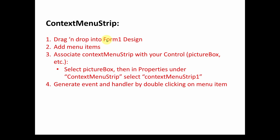You drag and drop into the Form 1 design, then you add the menu items — it's very simple. You just type in which menu items you want and also the sub-menu items. Then you have to associate that context menu strip with whatever control you want. You basically just select the picture box, and then in the properties it has a property called context menu strip where you select which menu strip you want to associate with it.